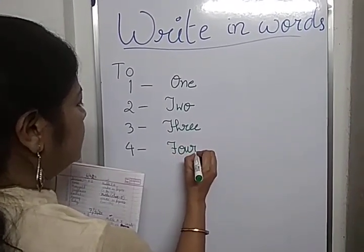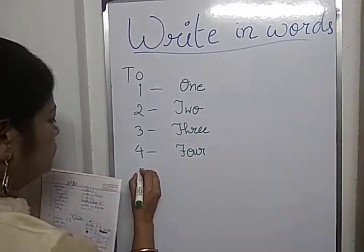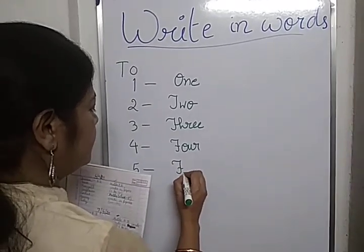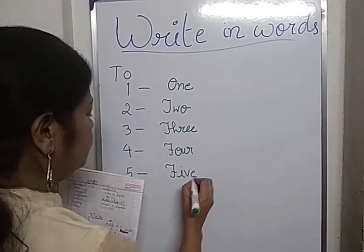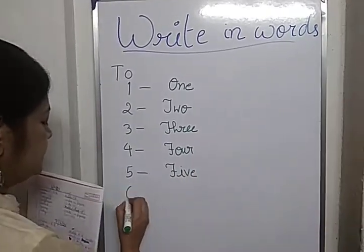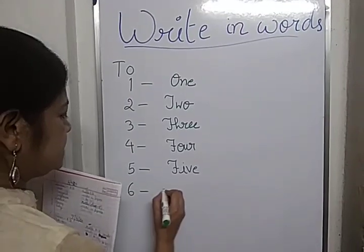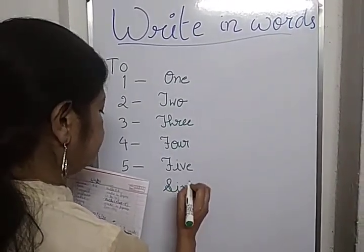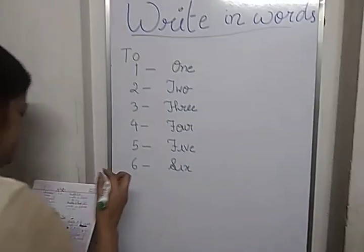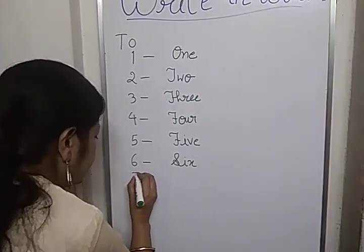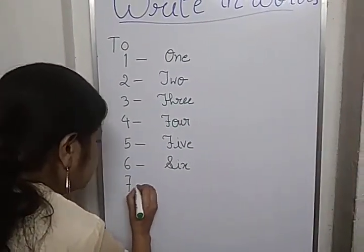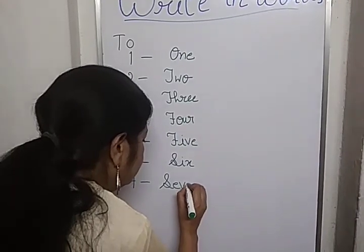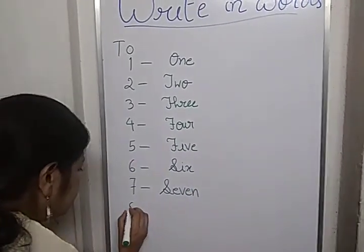Four: F-O-U-R. Five: F-I-V-E, 5. Six: S-I-X, 6. Seven: S-E-V-E-N, 7.